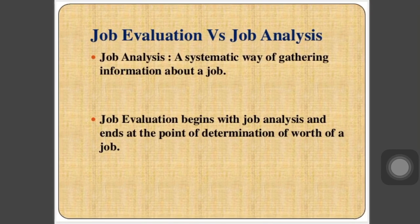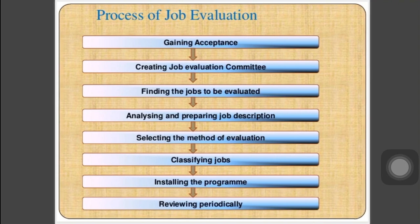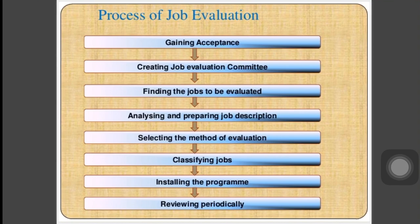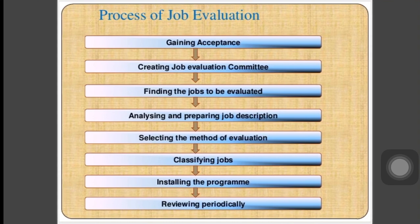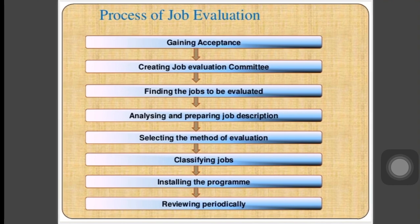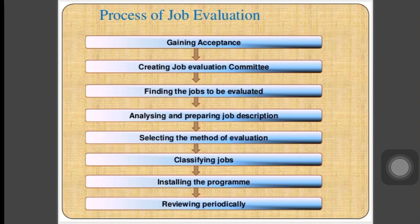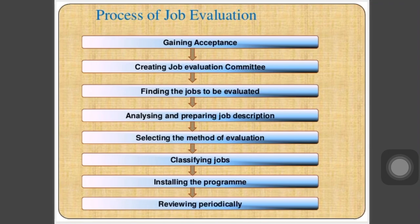The process of job evaluation starts with gaining acceptance from departments or management. After getting acceptance, a job evaluation committee is created, which finds the jobs that need to be evaluated. Next, job analysis and job descriptions are prepared. Then a method of evaluation is selected — there are basically four methods — and based on the kind of job, a certain method is chosen for the evaluation process.